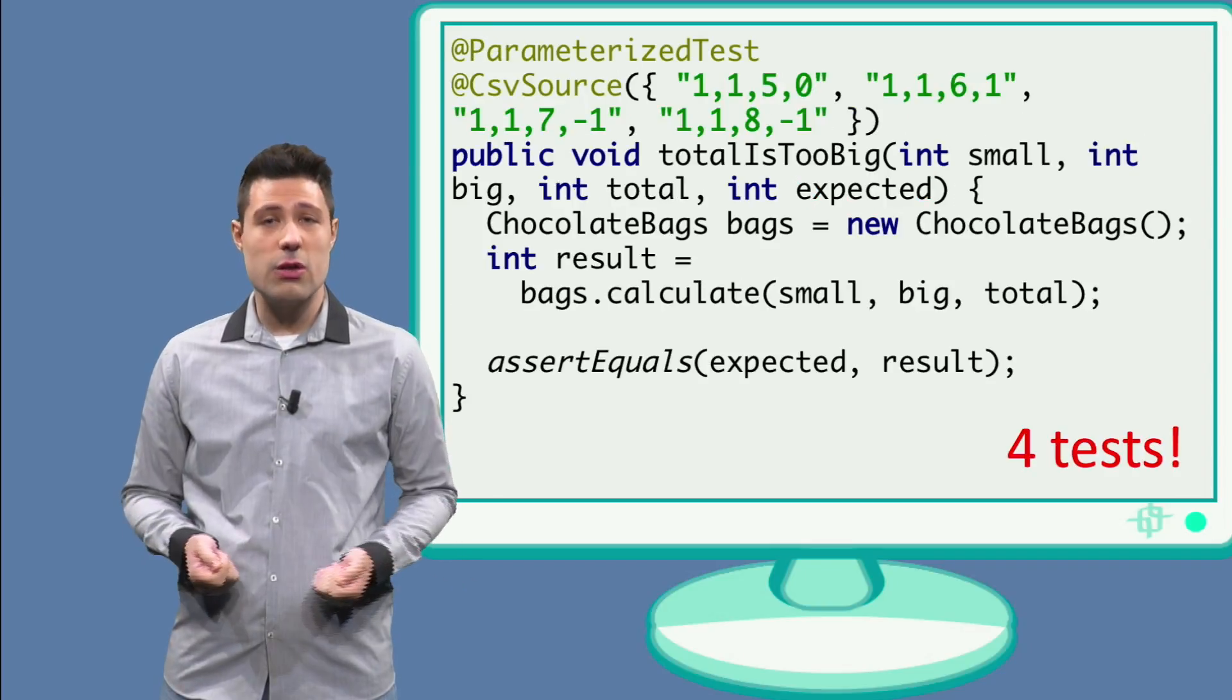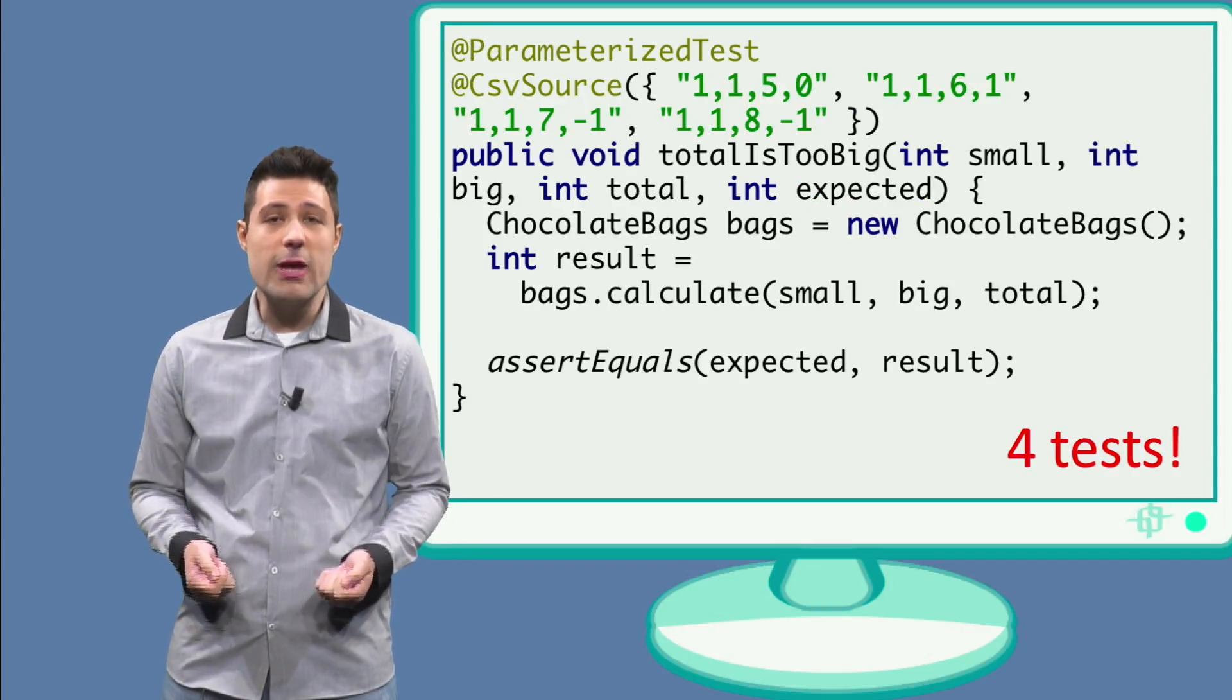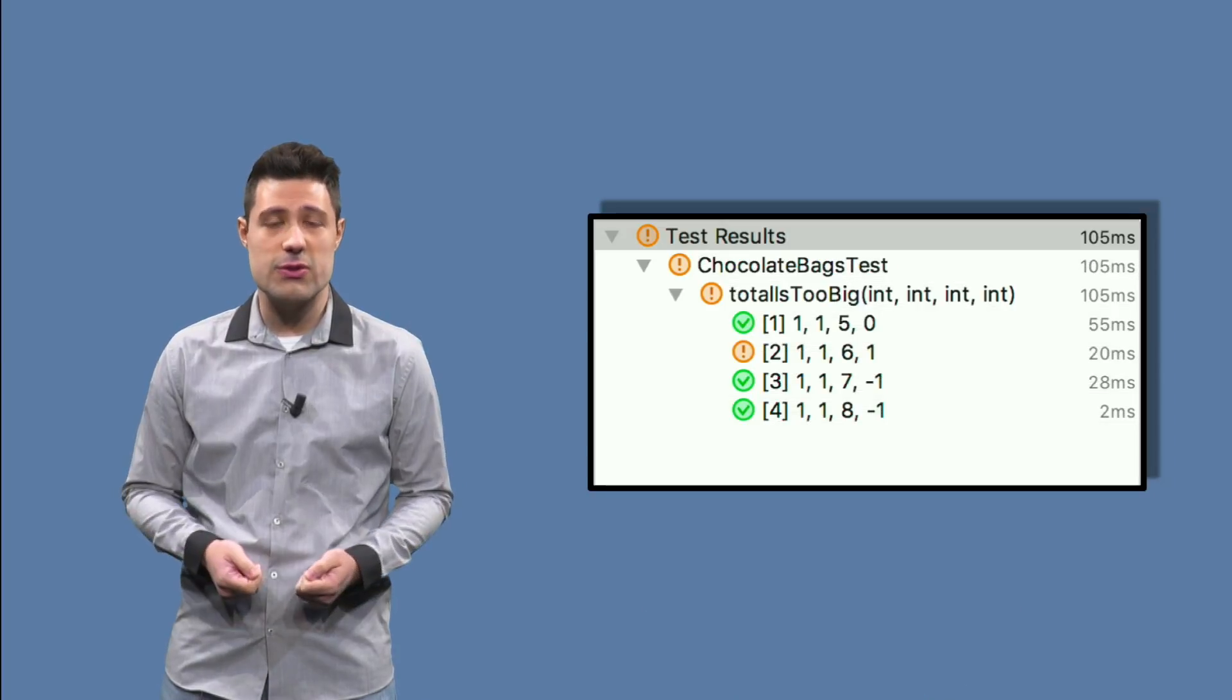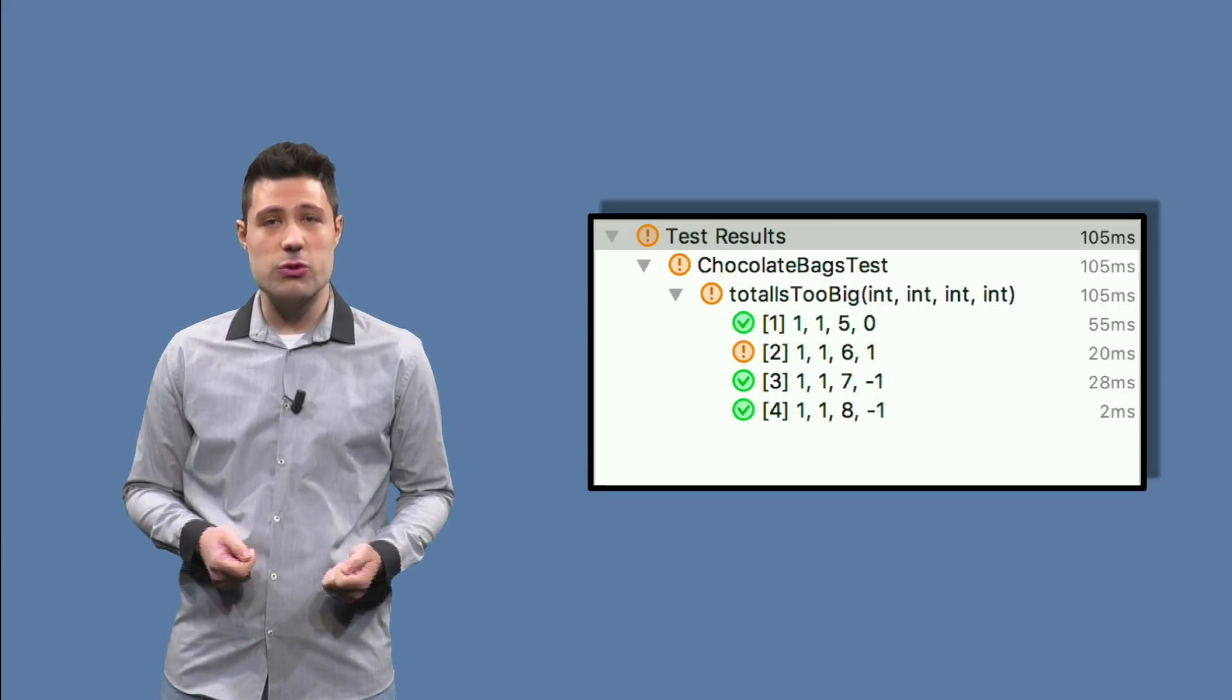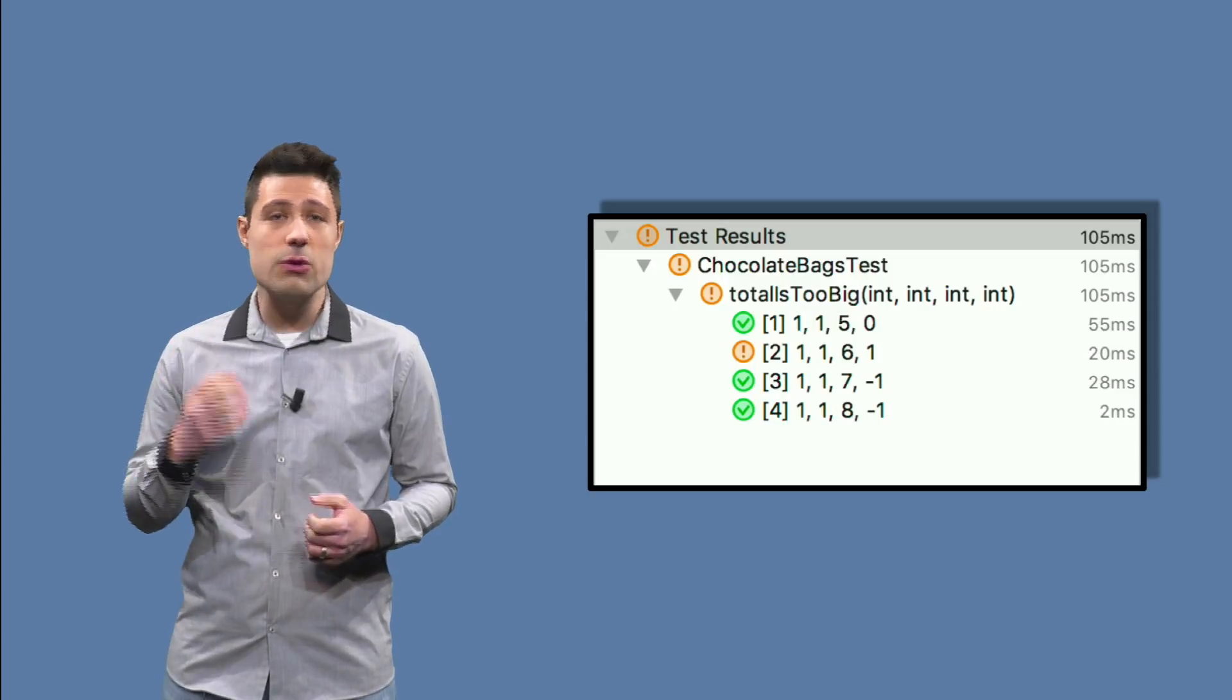But now, JUnit executes 4 tests instead of 1. And we can even see it when we run the tests. The output shows totalIs2big and then 4 executions.